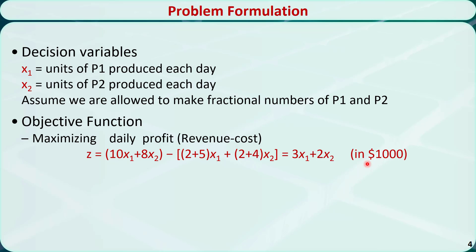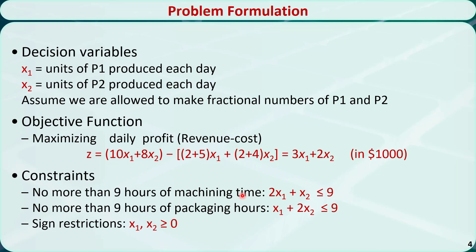We have a set of constraints. No more than 9 hours of machining time is available each day. The total machining time is equal to the unit machining time times the quantity for both P1 and P2. 2 times x1 plus x2 is less than or equal to 9. No more than 9 hours of packaging time is available each day. The total packaging time is equal to the unit packaging time times the quantity for both P1 and P2. x1 plus 2 times x2 is less than or equal to 9.